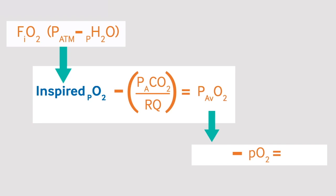Next, take the calculated alveolar PO2 and subtract the arterial PO2 on the blood gas. The normal range for the AA gradient is 2-4 kPa.